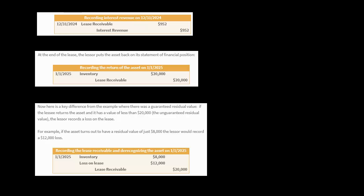This is a key difference. If the residual value had been guaranteed, the lessor would be receiving cash from the lessee. But they're not getting cash here because the lessee did not guarantee anything about what the value would be. So the decline in value means the lessor has to record a loss.